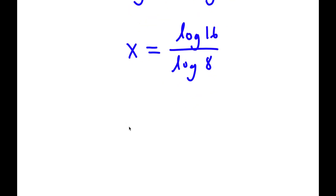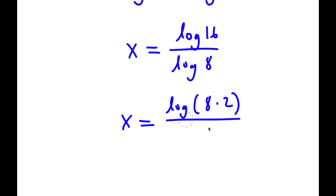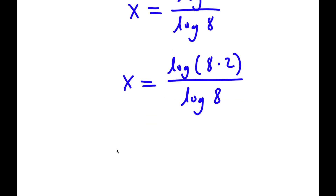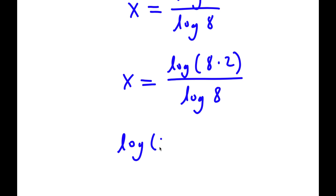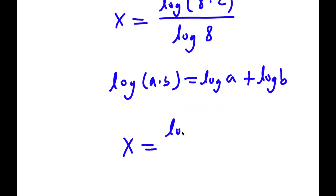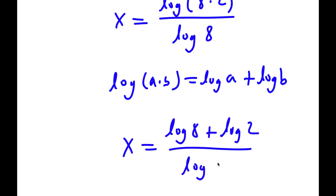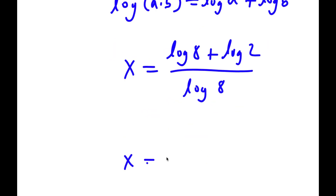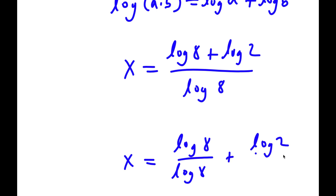Now log 16 is the same thing as log of 8 times 2. And if I have something in the form log a times b, this is equal to log a plus log b. So log 8 times 2 equals log 8 plus log 2 over log 8, which is the same thing as log 8 over log 8 plus log 2 over log 8.